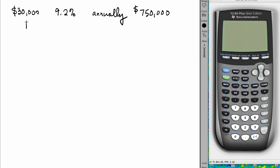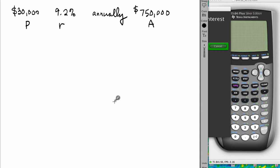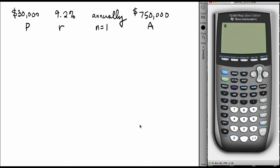In the formula, the amount of money invested is the principal P, and the usual symbol for the final value of the account is capital A. R is the rate, and compounded annually n equals one. Let's see how all of this plays a role in calculating the number of years.